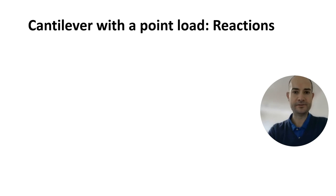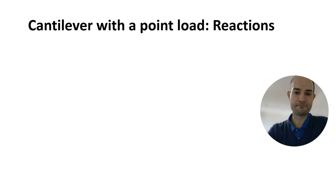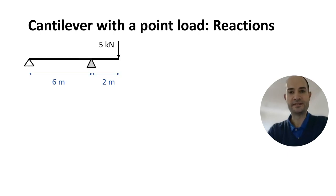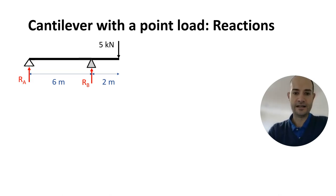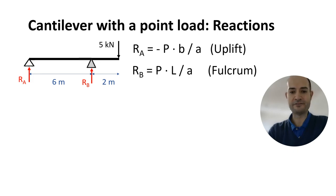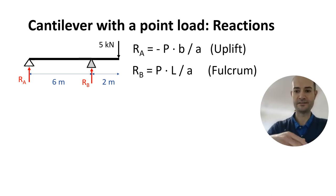Let's see first a cantilever beam with the point load at the end. As we did on the previous video for braces, we are calculating first the reactions and then bending moments. We have a 2-meter cantilever span with 6-meter tailback and a 5 kN point load at the end of the cantilever. We have two pin supports so we will calculate two vertical reactions, and there are a couple of equations to obtain the uplift on A and the fulcrum reaction. At the back of the cantilever you will get an uplift and at the front the legs will push down towards the ground.